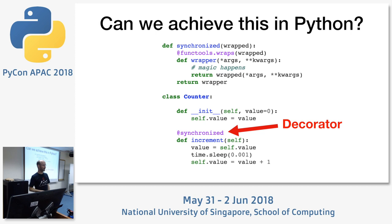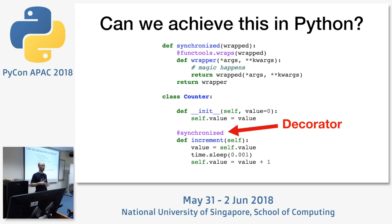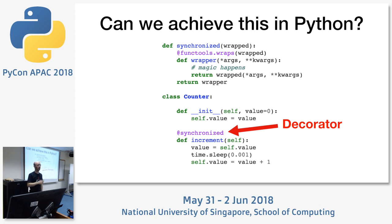To do that, we need a decorator. If you're not familiar with decorators, it's a way of providing a wrapper around a function so that when you call that function, it actually calls into your wrapper first, allows you to do some work, then calls the original wrapped function, and possibly does additional work on return. The `@` symbol is just syntactic sugar — you could have done this manually by calling the synchronized function, passing the increment method, taking the result, and reassigning the original increment.